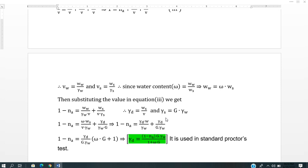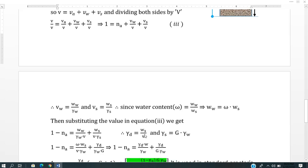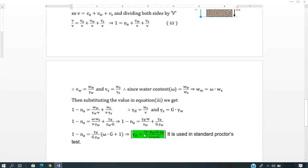Simplifying to solve for gamma d, we get gamma d equals 1 minus Na times specific gravity of solid times specific weight of water. This formula is used in standard proctor's test.